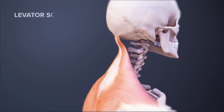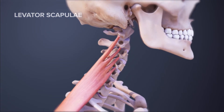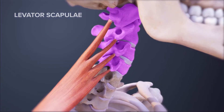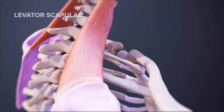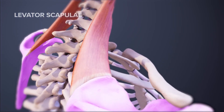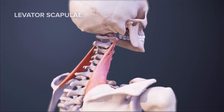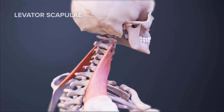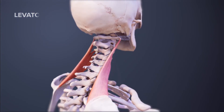The levator scapulae muscle attaches to the top four cervical vertebrae and runs down the side of the neck to where it connects with the top of the shoulder blade. This muscle helps with lifting the shoulder blade, bending the neck to the side, and rotating the head.